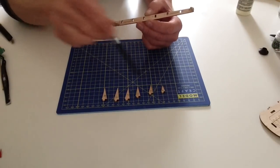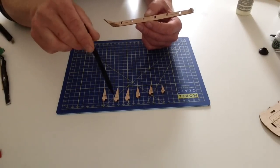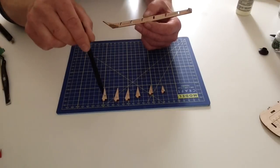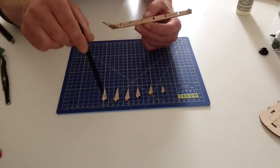Once you've done that, lay them out in sequence A, B, C, D, E, F and you should have them all going from the largest to the smallest.